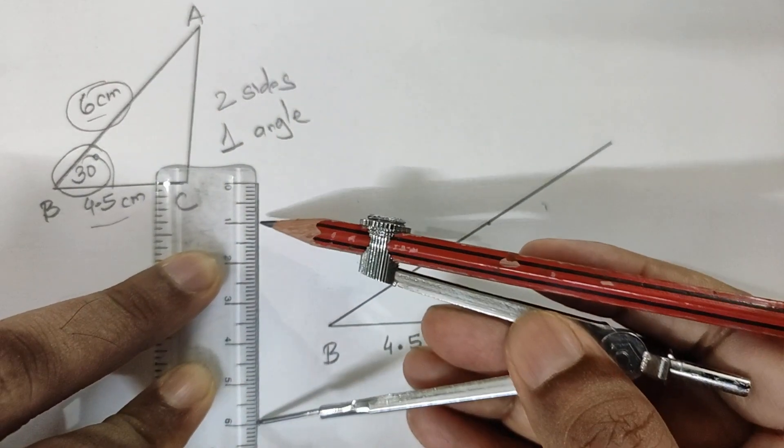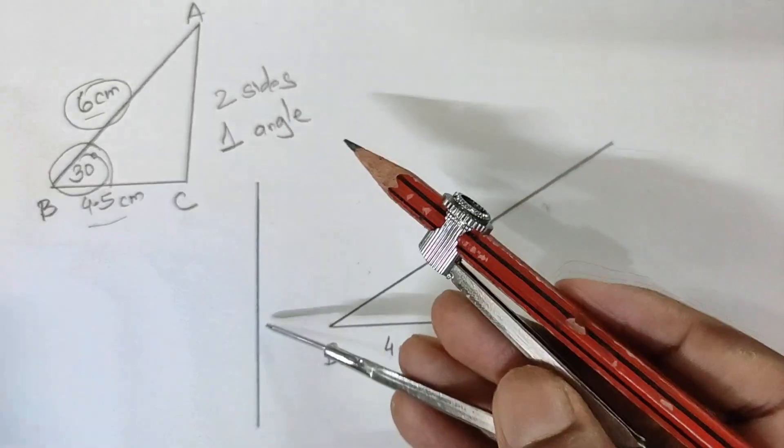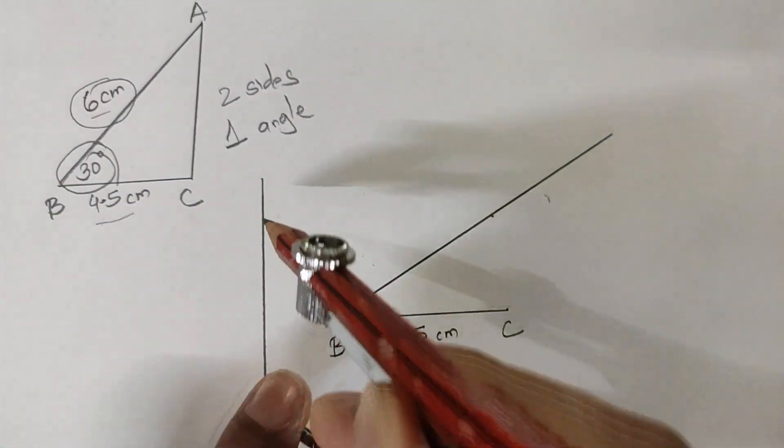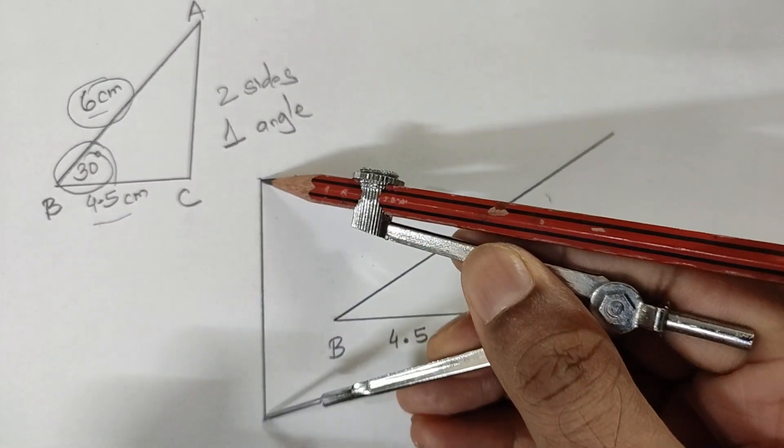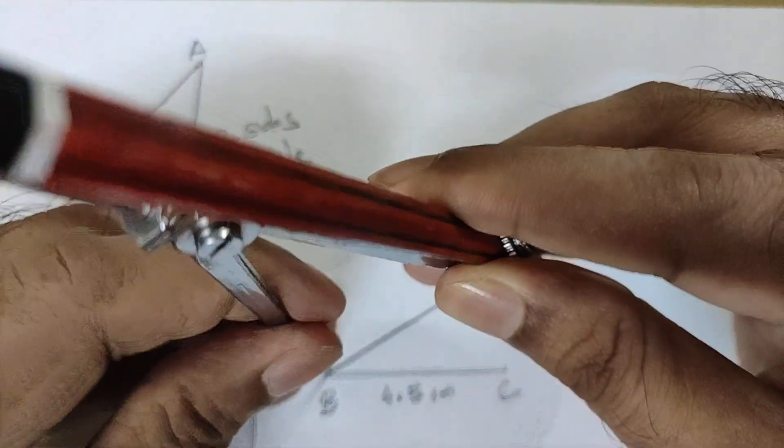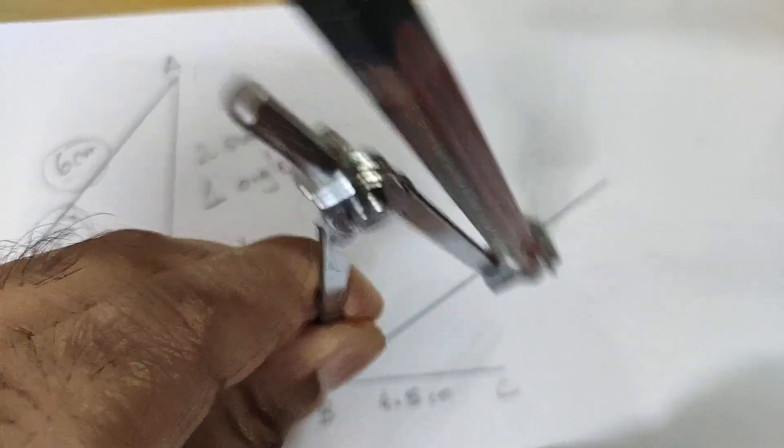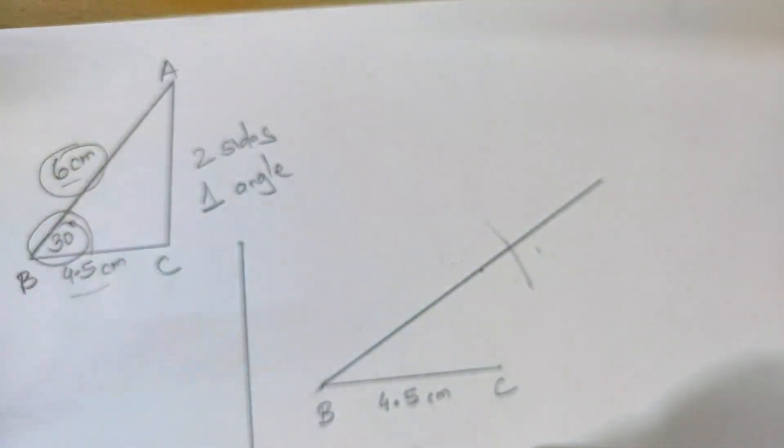Try taking six centimeters directly on the compass. The chances of error increase. Better you draw a line first, then place the compass in this way and adjust it. Now this length is six centimeters. Place the metal point over here and mark this way. Once the marking is done...